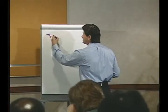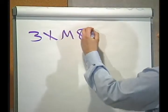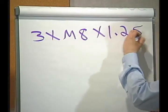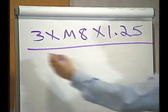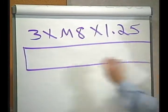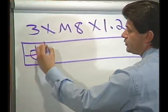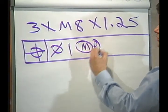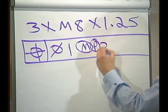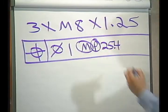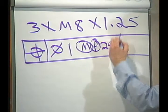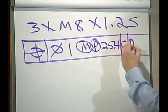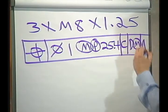So this is three times M8 by 1.25 pitch, and the tolerance will be positioned within a diameter of one millimeter at maximum material condition, projected tolerance zone 25.4, a lot of stuff, to C, D at maximum material condition, and A.